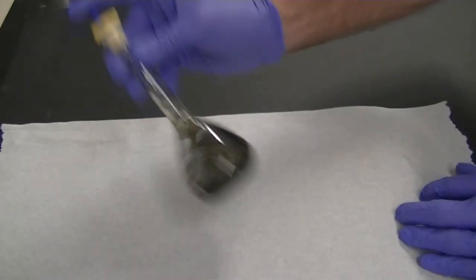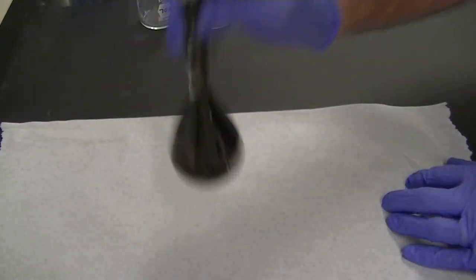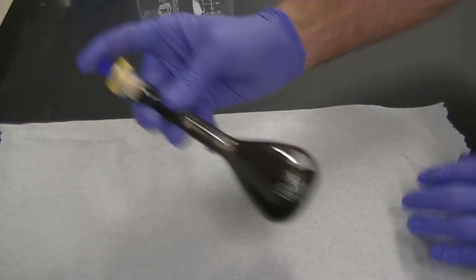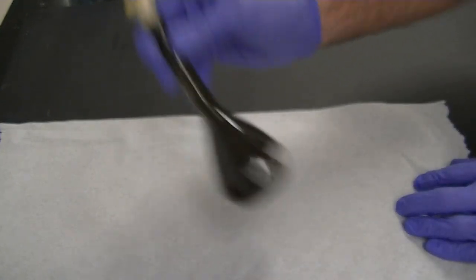Once both fluids were added to the flask, I shook the flask to encourage the silver metal that was formed to coat onto the sides of the flask. I shook for a really long time.